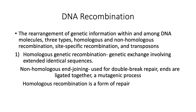DNA recombination is a recombination of genetic information within and among DNA molecules. There are three types: homologous and non-homologous recombination, site-specific recombination, and transposons. For homologous genetic recombination, this is genetic exchange involving extended identical sequences. Non-homologous end joining is where you have double break repairs — the ends are ligated together, and this is a mutagenic process. Homologous recombination is a form of repair.